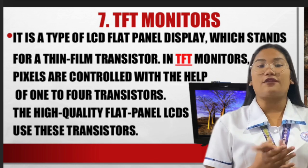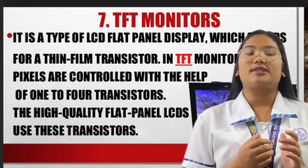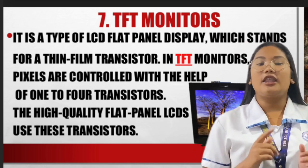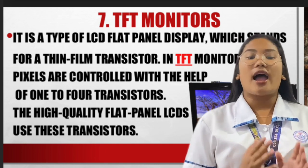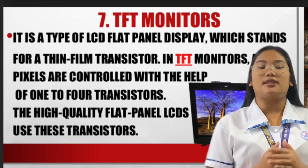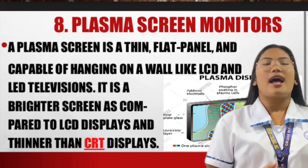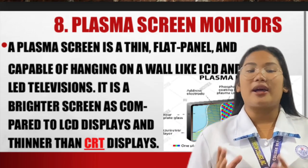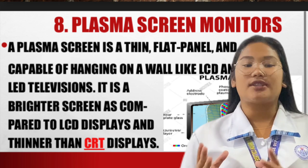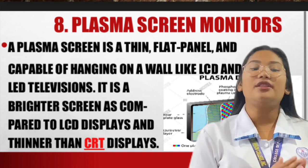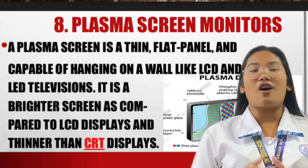The seventh one is the TFT monitor. It is a type of LCD flat panel display which stands for thin film transistor. In TFT monitors, all pixels are controlled with the help of one to four transistors, and high-quality flat panel LCDs use these transistors. The eighth one is the plasma screen monitor — a thin, flat panel capable of hanging on a wall like LCD and LED televisions. It is a brighter screen compared to LCD displays and thinner than CRT displays. And that would be all, thank you.